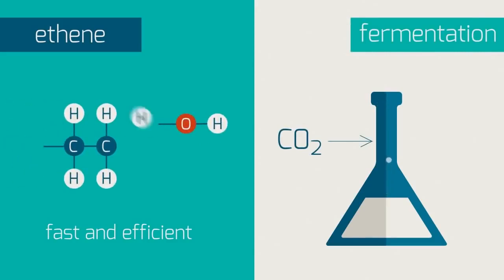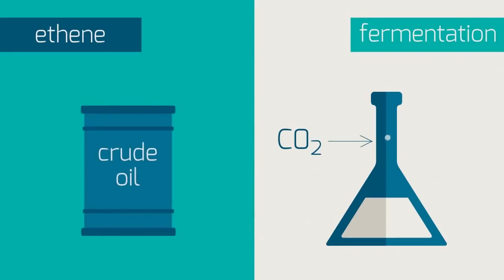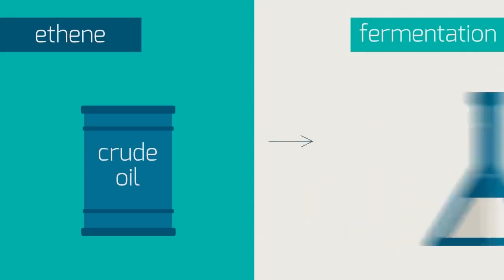But ethene is cracked from crude oil, which is a non-renewable resource, so we won't be able to carry on acquiring it this way forever. Plant sugars, on the other hand, are a renewable resource.